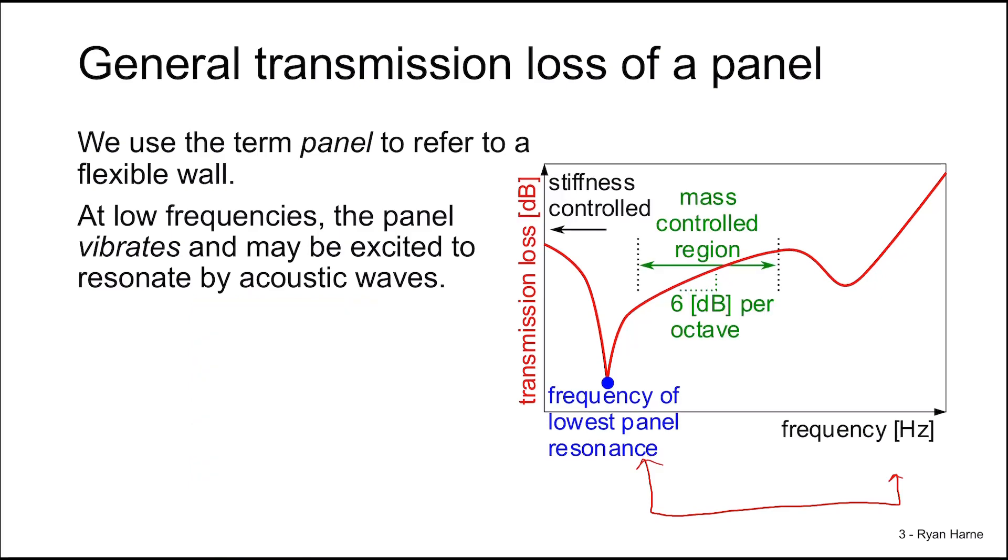If we consider the mid-frequency range of the transmission loss of a typical panel, we find that it is controlled by the mass of the panel. It has a slope of 6 decibels per octave, or an octave as a doubling of frequency, and we've seen before that doubling the thickness of the panel in this mass-controlled regime would increase the transmission loss by 6 decibels. Conversely, cutting the mass down by one-half would reduce the transmission loss here by 6 decibels.